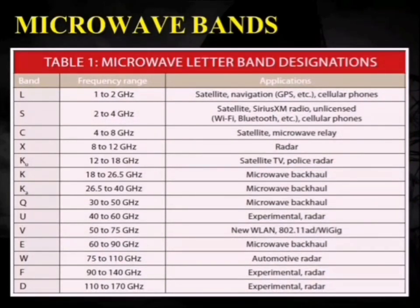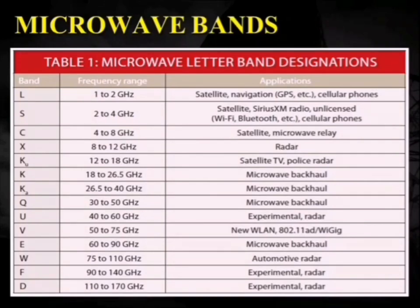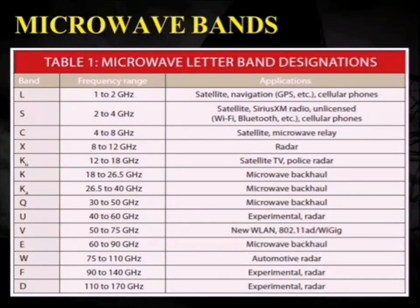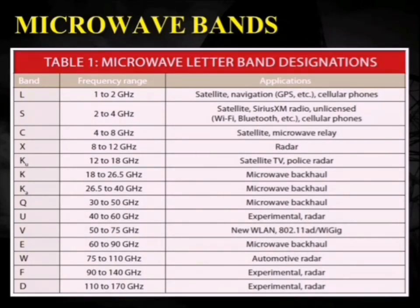Since this subject focuses on microwave and radar engineering, we discuss microwave bands in detail. The microwave frequency range from 1 GHz to 300 GHz is divided into bands: L band (1–2 GHz) for satellite, GPS, and cellular phones; S band (2–4 GHz) for Wi-Fi, Bluetooth, and cellular phones; C band (4–8 GHz) for satellite and microwave relays; X band (8–12 GHz) for radar purposes; and further bands extending up to 170 GHz.